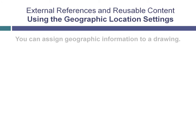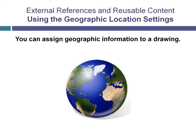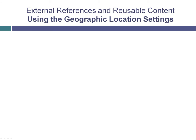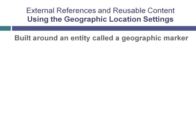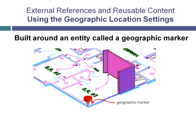You can assign geographic information to a drawing file. Inserting geographic location information into a drawing makes points within the drawing correspond to geographic locations on the surface of the earth. Geographic location information in a drawing file is built around an entity known as a geographic marker. The geographic marker points to a reference point in model space that corresponds to a location on the surface of the earth of known latitude and longitude.